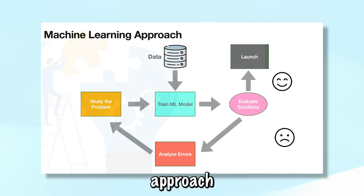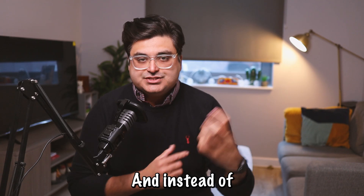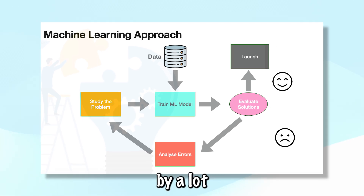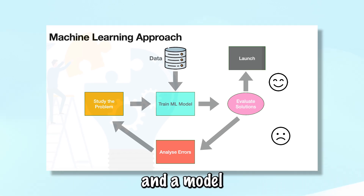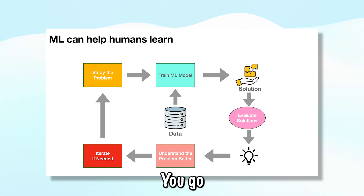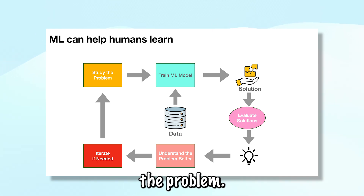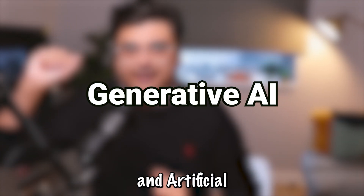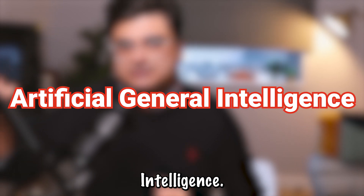What is the machine learning approach to solving a problem? You study the problem, and instead of writing your own rules, you replace that part with a lot of data and a model. If you're happy, you launch your solution; if not, you analyze the error and go back to study the problem. So AI is categorized into artificial narrow intelligence, generative AI, and artificial general intelligence.